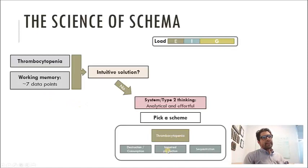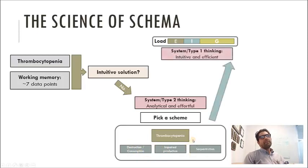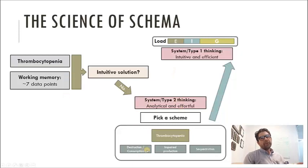If I break thrombocytopenia down into three major mechanisms, under each mechanism I can think of five, six, or seven different causes of destruction, and five, six, or seven different causes of impaired production, and ultimately arrive at an efficient solution. By using a scheme, I've freed up the intrinsic load of the task. I don't have to think of a hundred different things — I have a simple set of buckets, and now I have some germane load to learn a little bit more.